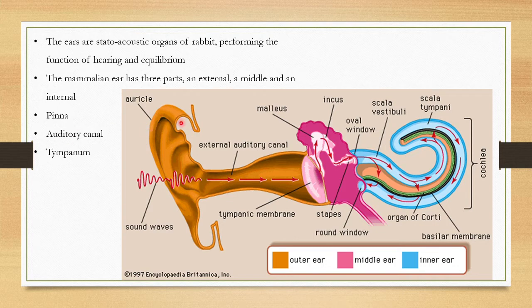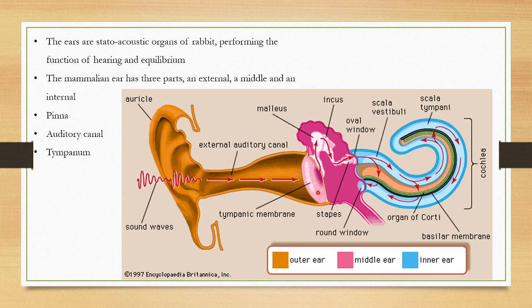The external ear is made up of the pinna. The elongated pinna directs the sound towards the external auditory canal. The auditory canal touches the tympanum, a vibrating membrane. So the tympanum, external auditory canal, and pinna together constitute the external ear.